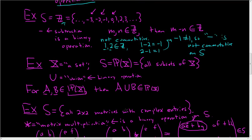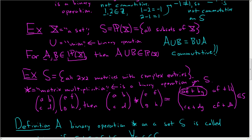The next example was union on the power set. Certainly A ∪ B equals B ∪ A, so union is a commutative binary operation. The last example was matrix multiplication, and this one is not commutative. If you make up two matrices and multiply them both ways, you will generally get different results. So in general, matrix multiplication is not a commutative binary operation.